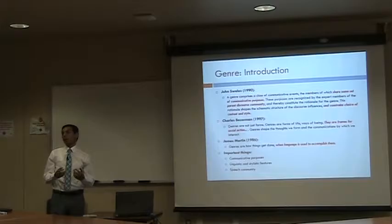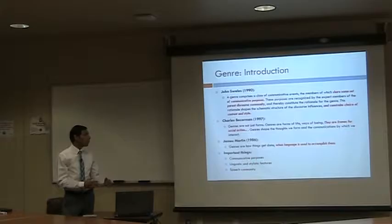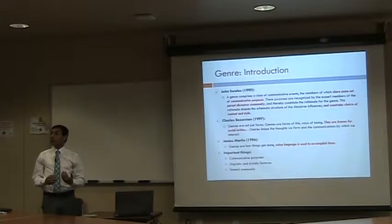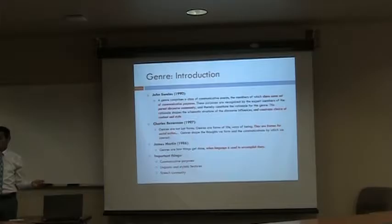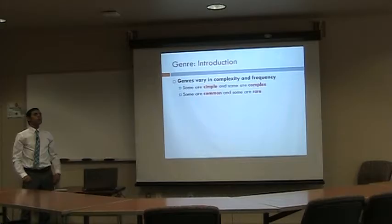Three things are important across these three definitions. First is communicative purpose — even if it's hard to define procedurally. For example, if a student does his best to order a meal at a restaurant, did he meet the communicative purpose? For some, yes; for others, communicative purposes may be broader. Second is the linguistic and stylistic features: choice of lexical items, structures, and rhetorical moves. Third is the speech community — or community of practice — the people who develop conventions for these different genre types.